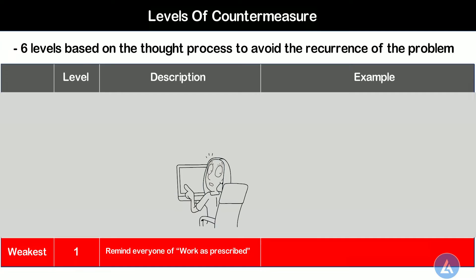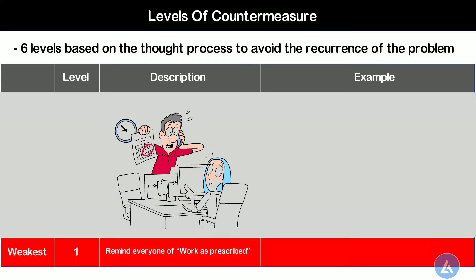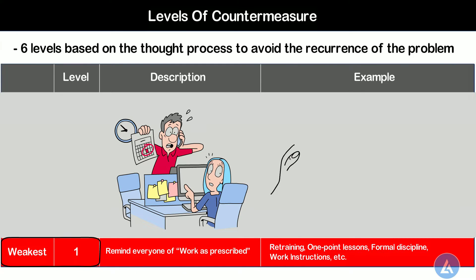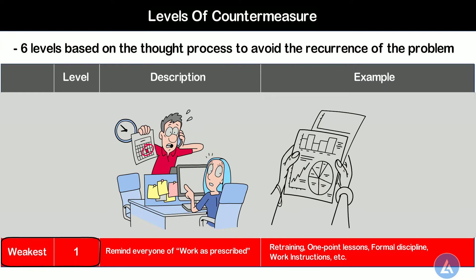At this level of countermeasure, the focus is only on the improvement of people and adding more and more activities to remind everyone to work as prescribed. Examples of this level of countermeasures are retraining, one-point lessons, formal discipline, work instructions, etc. If the countermeasures for root causes you found in your project are at this level, your problem is going to be repeated with higher frequency. That's why it is called the weakest level of countermeasure, marked as red in the countermeasure ladder.